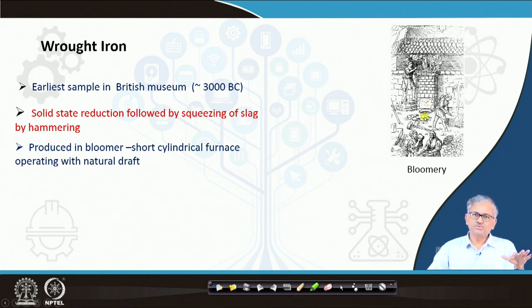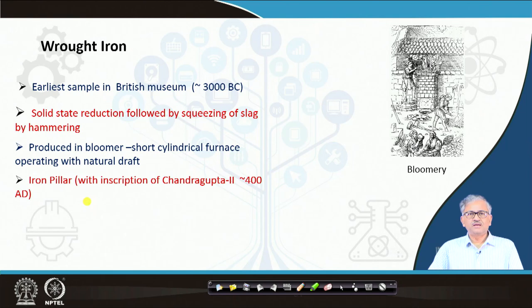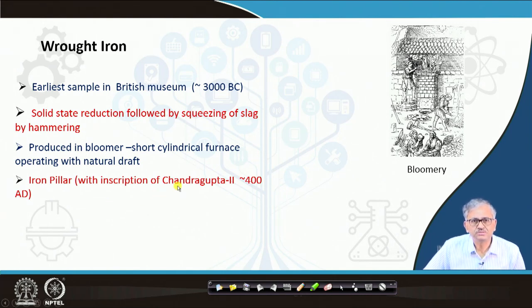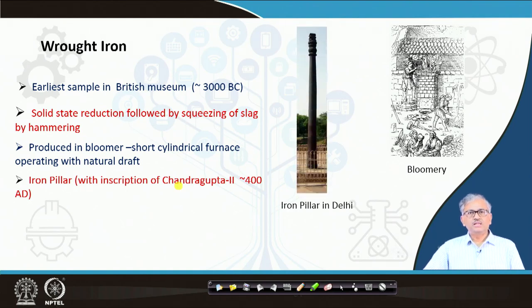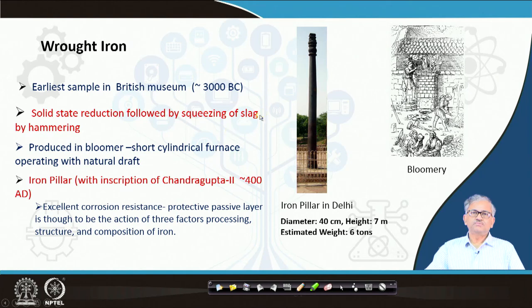If you hammer it, you can squeeze out most of the slag, but some of the slag obviously will be intermixed with the iron — and that is called wrought iron. It has some very special quality. The iron pillar that exists in Delhi is made of this wrought iron only, and the inscription on the iron pillar says it was made in the time of Chandragupta II. It is around 400 AD, early 400s, the Maurya dynasty time. Its diameter is around 40 cm, height around 7 metres, and estimated weight around 6 tons.